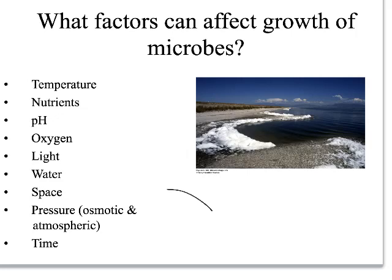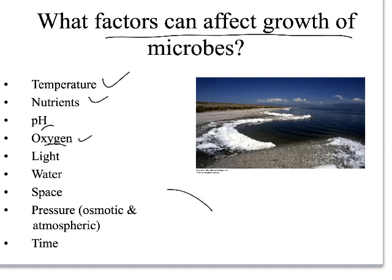This is the last part of chapter four on growth, covering what factors can affect how microbes grow. We want to look at temperature, the amount of nutrients they have, the pH of the media, how much oxygen is available, if they need light, how much light is available, how much water is available, whether they're running out of space, and osmotic and atmospheric pressure.